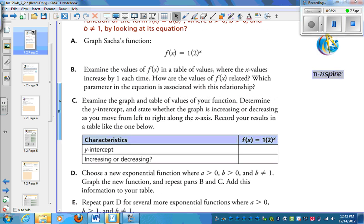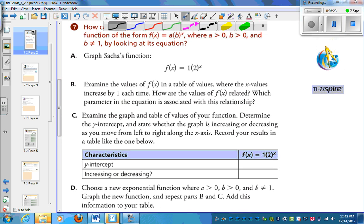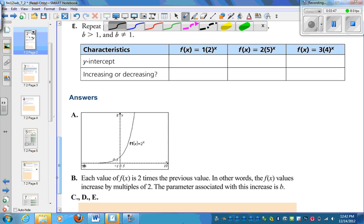That intercept corresponds to this value right here. That's the y-intercept. And that makes sense. Because whenever you have 3 to the power of 0, 7 to the power of 0, 1000 to the power of 0, that's always just 1. So it's going to be 1 times this value. So that's always going to give you, when you put 0 in for x, a y-intercept of that value. This is an increasing function. As you move from left to right, values are getting bigger.